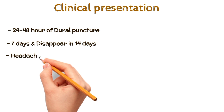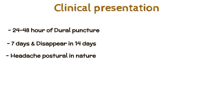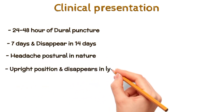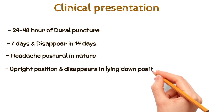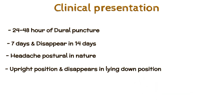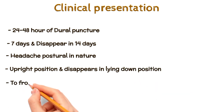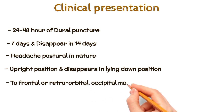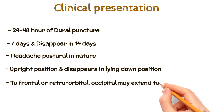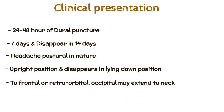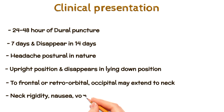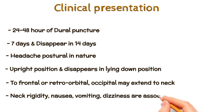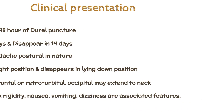The headache is postural in nature — it mostly occurs in the upright position and disappears when lying down. It is throbbing in nature, bilateral, confined to the frontal or retroorbital and occipital regions, and may extend to the neck. Neck rigidity, nausea, vomiting, and dizziness are associated features.